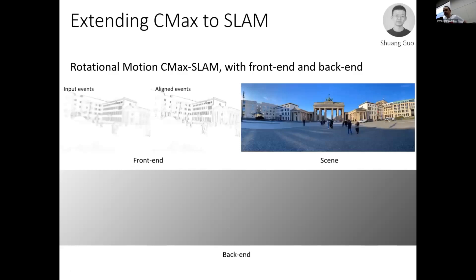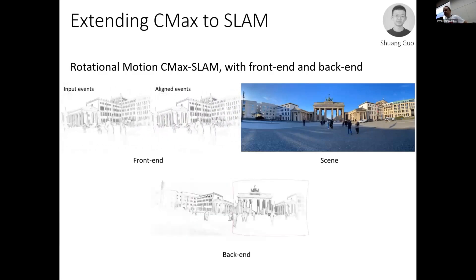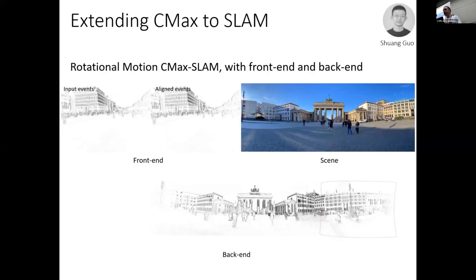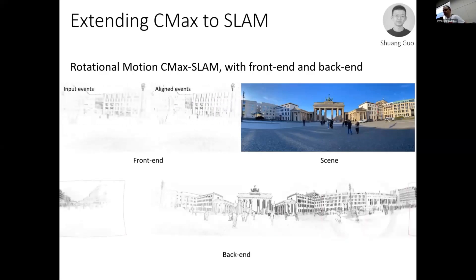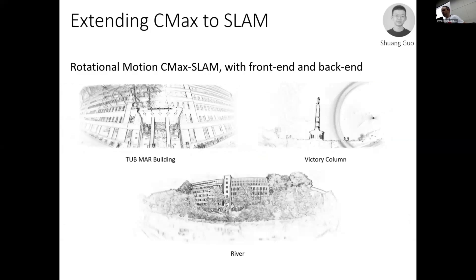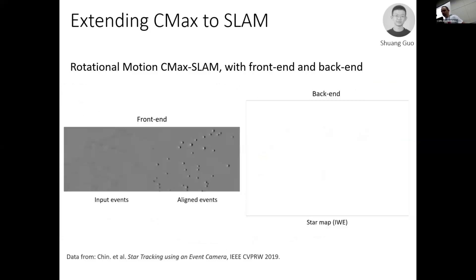This is extending contrast maximization to do SLAM — work of Shuanguo, who is also here in the audience. We are doing full SLAM with a front-end and back-end, refining with contrast maximization both the trajectory of the camera in 3 degrees of freedom and the map. This uses the DV Explorer with VGA resolution. Once you have the trajectory, you can obtain panoramic grayscale images. The method works well even when the sun is in the field of view causing glare. It works nicely with 360 degrees and can be applied to other scenarios like sky mapping or star tracking.